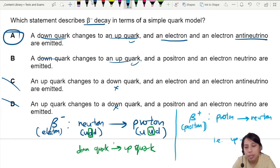So in other words, an up quark becomes a down quark, because proton is up, up, down, and neutron is up, down, down. So you can memorize these facts.